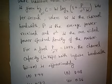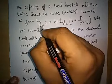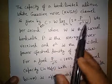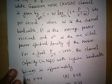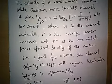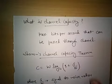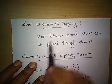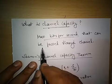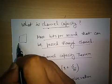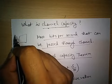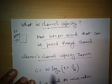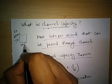First we will learn the channel capacity theorem and then elaborate the formula for W tending to infinity. Channel capacity is the maximum bits per second that can be passed through a channel. For example, if we are passing 2 kilobits per second and the capacity of the channel is only 1 kbps, then we cannot pass at that rate.